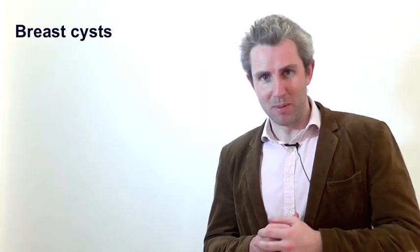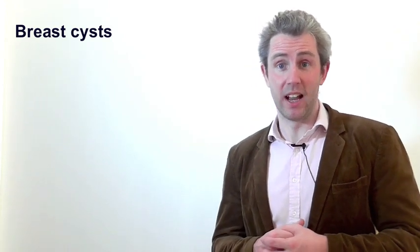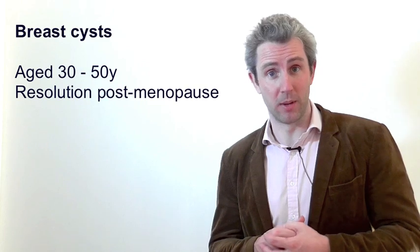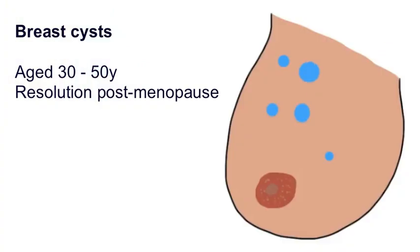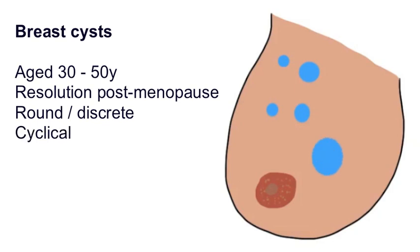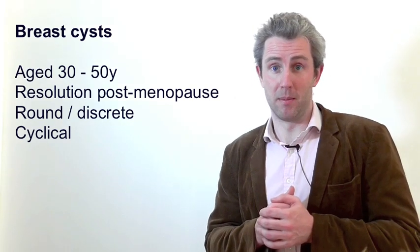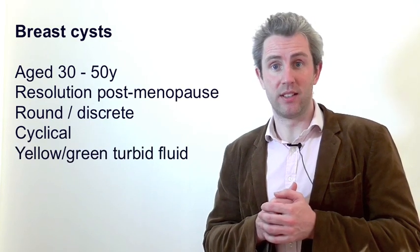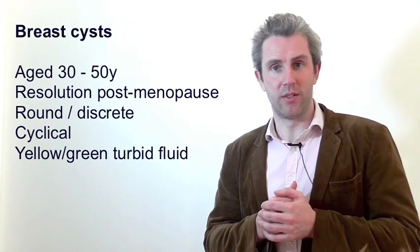10% of women at some point in their lives will develop symptomatic breast cysts during their reproductive years. Women at presentation are usually aged between 30 and 50, and the cysts tend to go away after the menopause unless the woman is on hormone replacement therapy. The cysts may be single or multiple, unilateral or bilateral, and most are found on self-examination. Clinically these are round, symmetrical and discrete lumps that increase in size and tenderness just before menstruation, then decrease after. The cysts are imaged with ultrasound and/or mammogram and can be aspirated to reduce tenderness. Normally this yields a yellow-green turbid fluid, but if it contains blood the fluid should be sent for cytology.